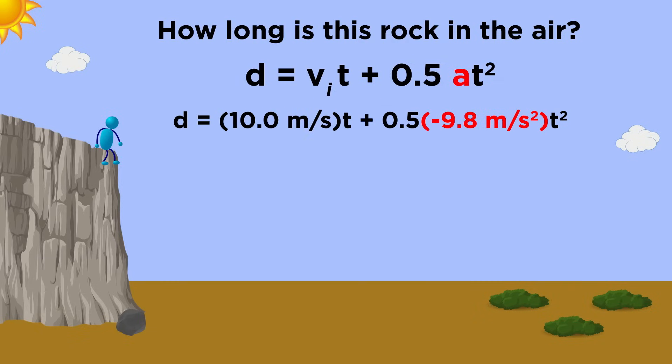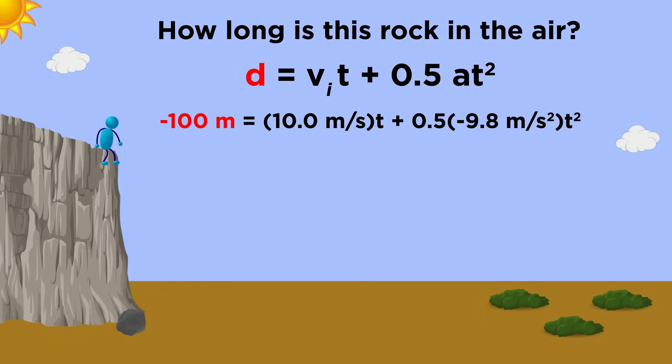We plug in negative 100 meters for the displacement, remembering that even though the distance this rock will travel is greater than the other one, both rocks start and end in the same place. Then we plug in the other numbers.